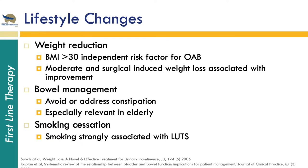Weight reduction is associated with improvement, as obesity is an independent risk factor for OAB. Particularly in the elderly, bowel management can also help — constipation is especially relevant in this population, which is a big part of the OAB population as well. Finally, smoking has been associated with bothersome lower urinary tract symptoms, so cessation of smoking can also help with symptomatology.